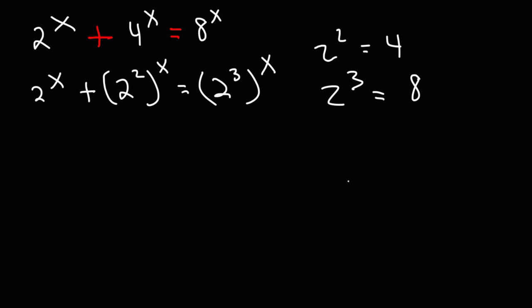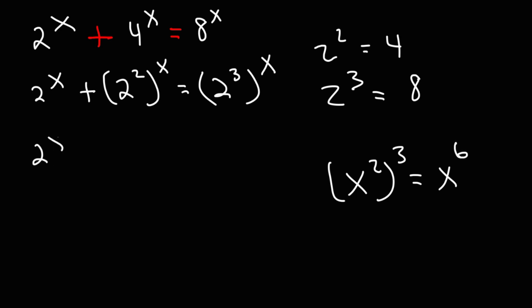When you raise one exponent to another exponent, you can multiply the two exponents. For instance, x squared raised to the third power is equal to x to the sixth power. So 2 squared raised to the x power is just 2 raised to the 2x — you can multiply 2 by x. And all of that will be equal to 2 to the 3x.